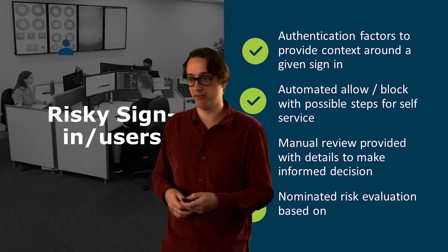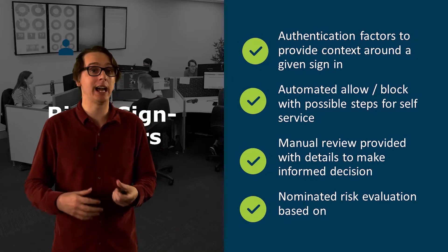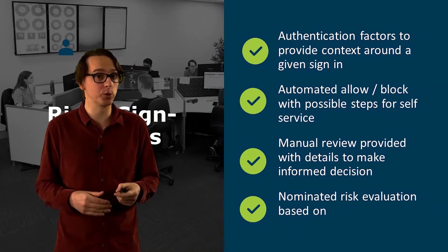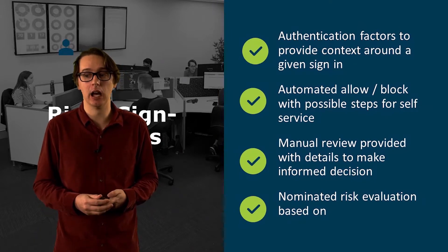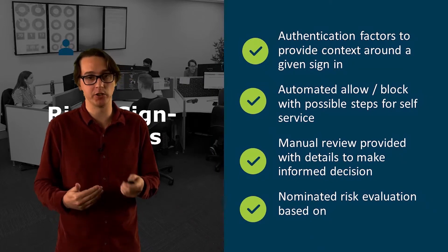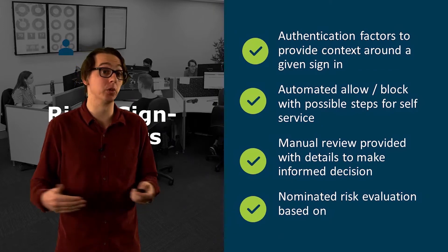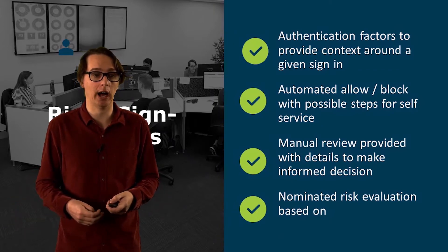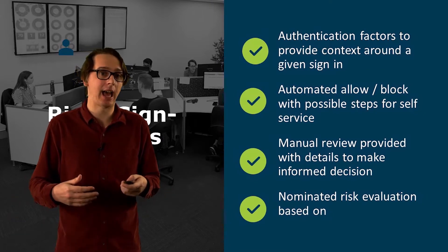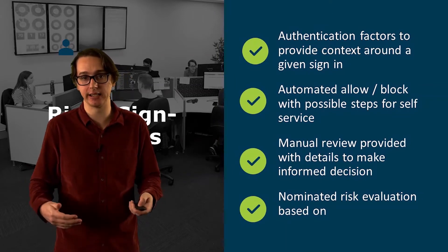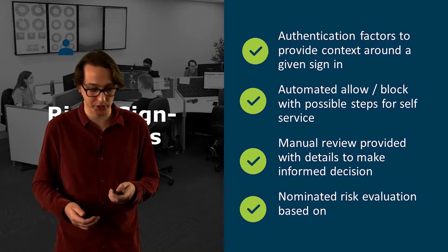Authentication factors give some context around the sign-in itself. They allow you to make choices at different levels of those risky users or risky sign-ins. You can then make a manual review of each of the different types of risky sign-ins or risky users to basically block that user from being signed in or restrict them from certain access. The goal is to have an evaluation of your sign-ins at the identity level and then be able to make educated decisions around how you handle those sign-ins.